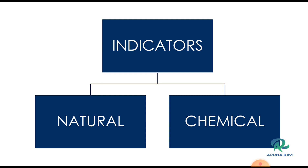What is an indicator? An indicator is a substance which is used to identify whether a given substance is an acid, base, or neutral. These indicators are classified as natural indicators and chemical indicators.